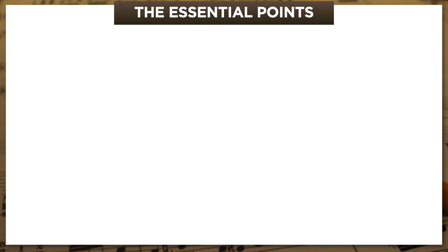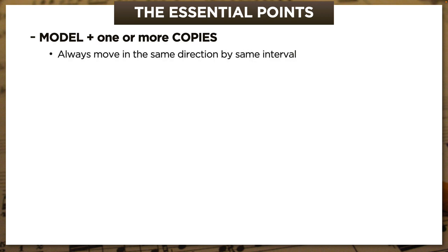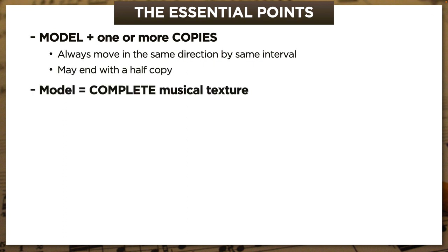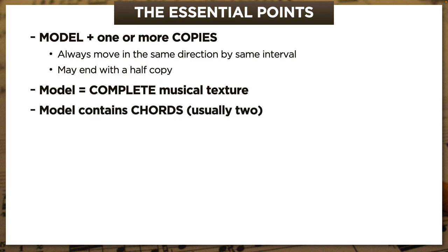Let's recap what we know about harmonic sequences. They're always built from a model and one or more copies, and if there's more than one copy, they'll always move in the same direction by the same interval. They might also end on a half-copy—we saw that today. The model involves the complete musical texture, not just some isolated chunk of melody, and because of this, the model contains chords—usually two chords per model. Because of the copy-paste logic, we can expect to see chords and progressions that don't turn up elsewhere.